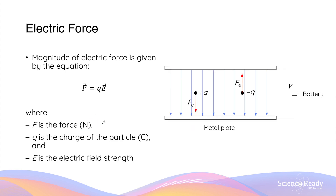When a charge is inside a uniform electric field, it will be acted upon by a force due to the electric field — we'll call this the electric force. The magnitude of this electric force is given by the equation: force F is equal to charge Q multiplied by the electric field strength E. The electric field strength E is also given by the voltage or potential difference divided by the distance between the plates.